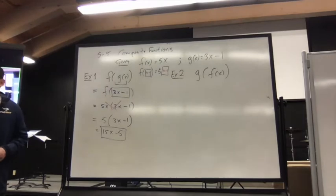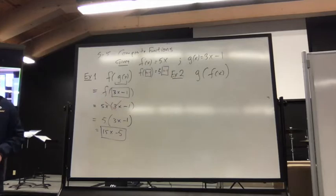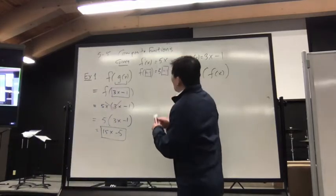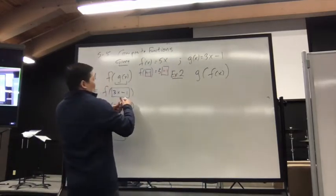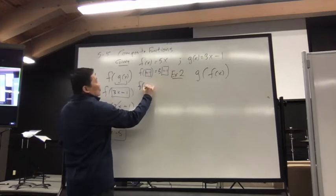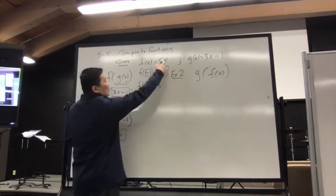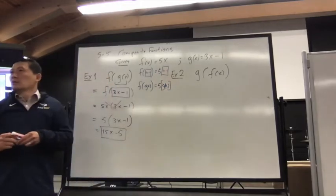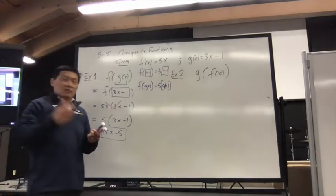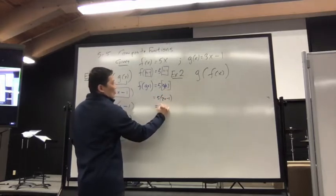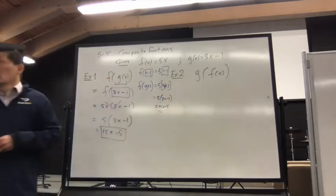What we're doing is replacing the X of the equation with the value of J — yes, the whole thing. Nathan is correct: F of G of X is found by replacing that X with G of X. That's also a really valid and much faster way of dealing with it. So that becomes 5 times G of X, and G of X is 3x minus 1, and that's just 15x minus 5. You end up with the same answer.